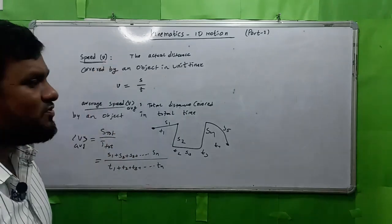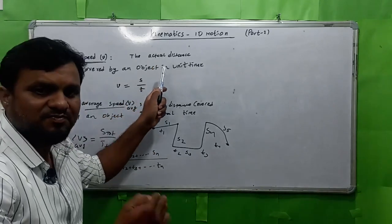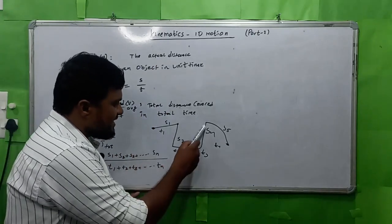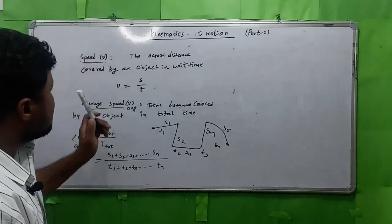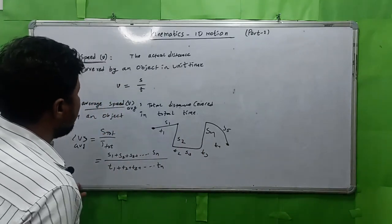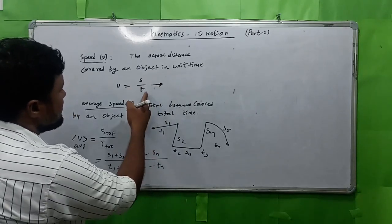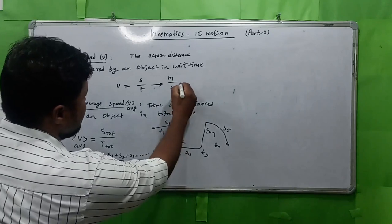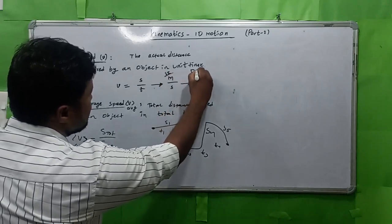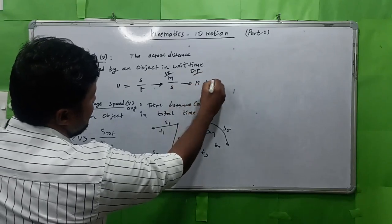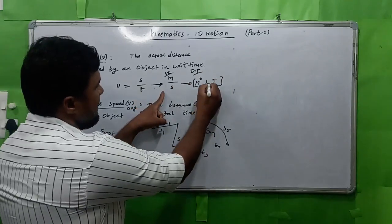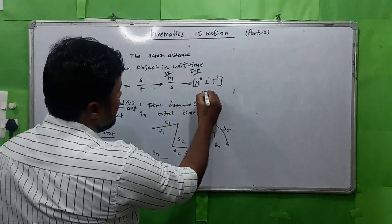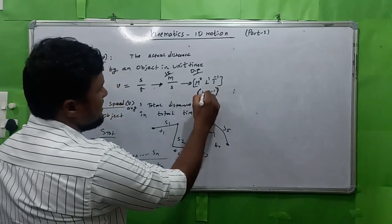Speed is a scalar quantity, obviously, because distance is scalar. We already discussed in the previous video that distance is scalar, and distance divided by time gives speed. So speed is a scalar quantity — it has only magnitude and no particular direction. The SI unit is meter per second. The dimensional formula: M⁰L¹T⁻¹, or simply LT⁻¹.